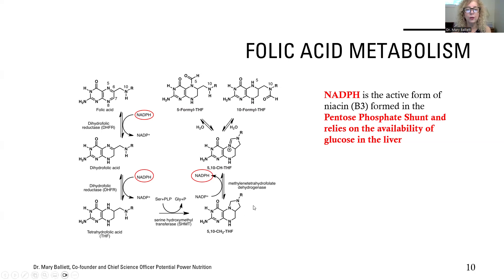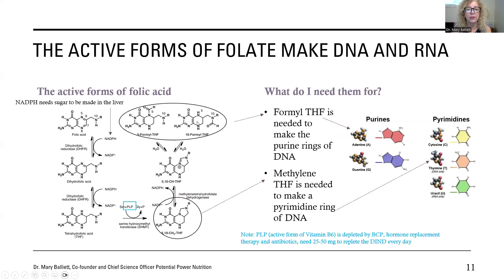Let's look at these two forms of folic acid: N5N10 methylene tetrahydrofolate and N5 formyl tetrahydrofolate. Those two forms are actually needed to make DNA, and I need DNA and RNA to make protein. If I do not have this, I cannot make healthy hair, skin, nails, or red blood cells. Every single cell in my body needs to undergo mitosis — to make another cell — and in order to do that I need DNA, and then DNA becomes RNA. Without these two forms of folic acid, I can't do it.